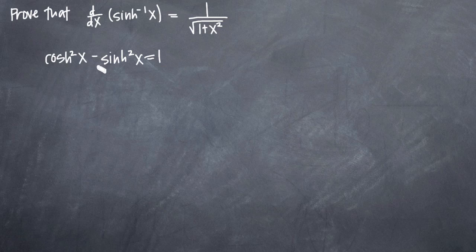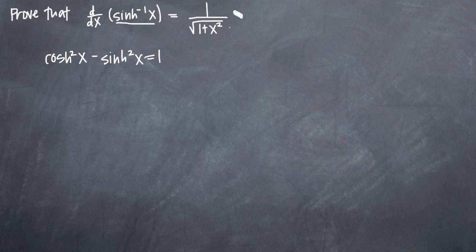One of the formulas we're going to use is a very common identity: hyperbolic cosine squared of x minus hyperbolic sine squared of x is equal to 1. We need to show that the derivative of inverse hyperbolic sine equals what we have on the right-hand side, so we're going to hone in on that derivative.